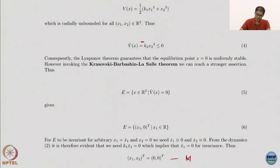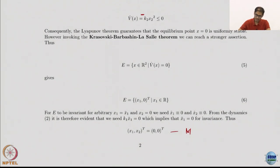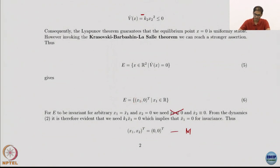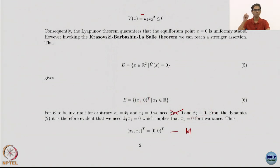The set E is where x2 equals zero and x1 is arbitrary. As always, we start by assuming E itself is the invariant set. For E to remain invariant, there is an incorrect statement in the notes: we needed both x1_dot and x2_dot to be zero, but that is not required. x1_dot need not be zero because x1 can be anything — even if it changes, we do not care, since it does not contribute to V dot being zero. So that condition is not required — I have crossed it out.